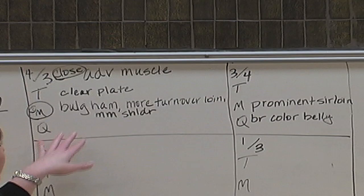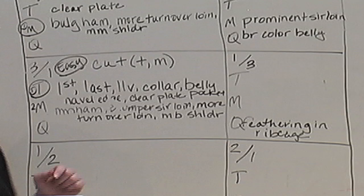I placed the pork carcass class 4-3-1-2. In a close pair I placed 4 over 3 due to advantages in muscling, as evidenced by a more bulging ham, more turn over the loin, and a more muscular shoulder. Additionally, four possessed less fat over the clear plate. I grant that three had a more prominent sirloin and a brighter color of lean in the belly. In my middle pair I easily placed 3 over 1, as three was a higher cut-ability carcass that would yield a higher percentage of the four lean cuts. Three possessed less fat opposite the first rib, last rib, last lumbar vertebra, over the collar, extending from the belly pocket to the navel edge, and over the clear plate. Additionally, three had a more muscular ham, a plumper sirloin, more turn over the loin, and a more bulging shoulder. I grant that one possessed more feathering in the rib cage.